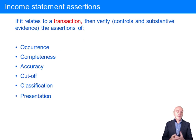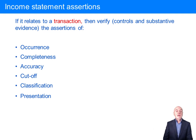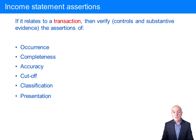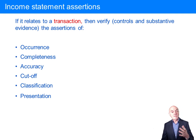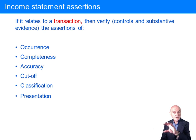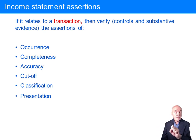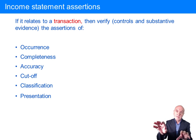The two groups: first, the assertions primarily to do with the income statement — transactions and events. How do we know that sales actually occurred? The sort of evidence you could get is: from a sales item, a credit in the sales account, going back to seeing the invoice that gave rise to that credit, then going back to the dispatch note and the order. So we have order → dispatch → invoice → credit in the sales account.